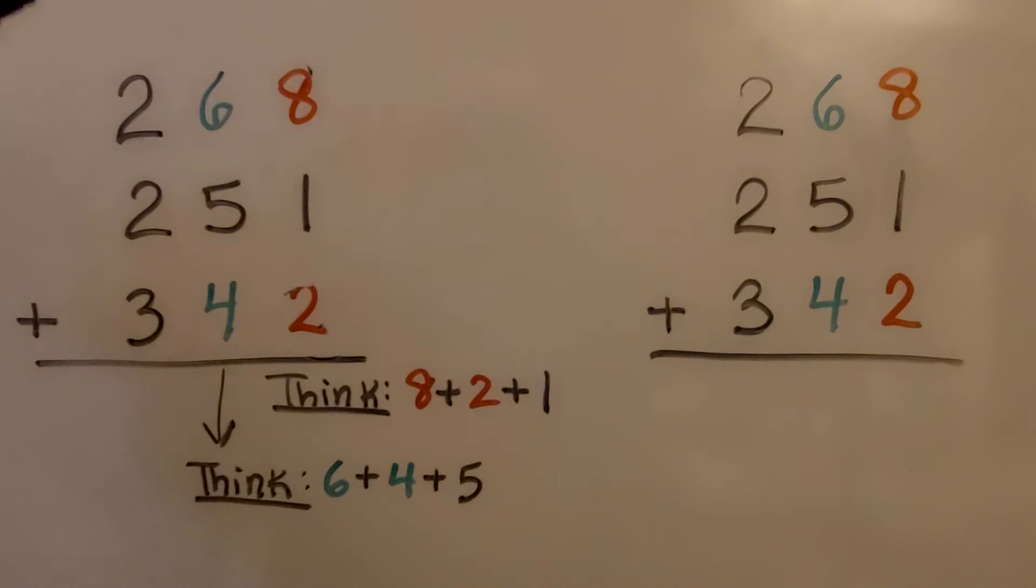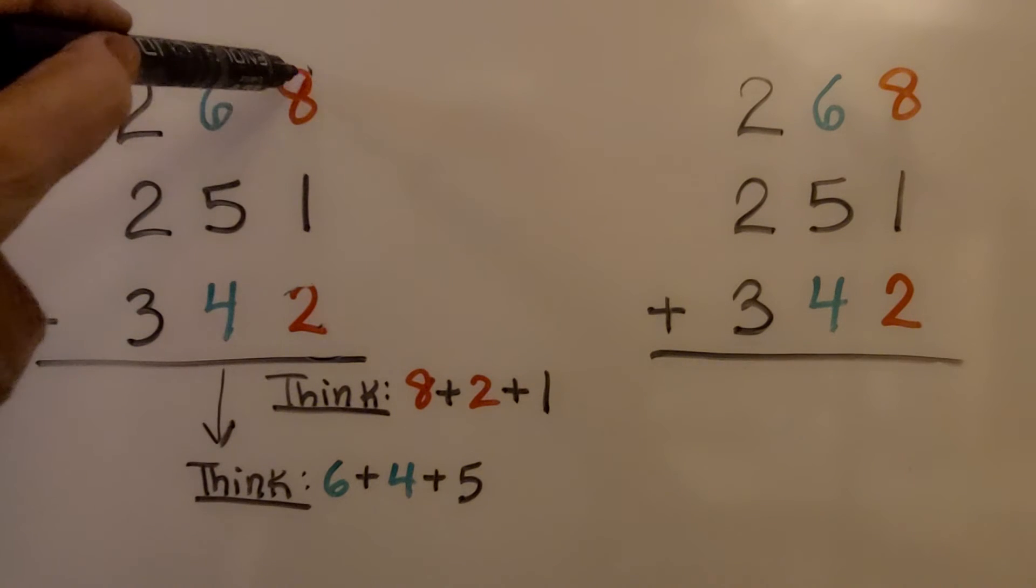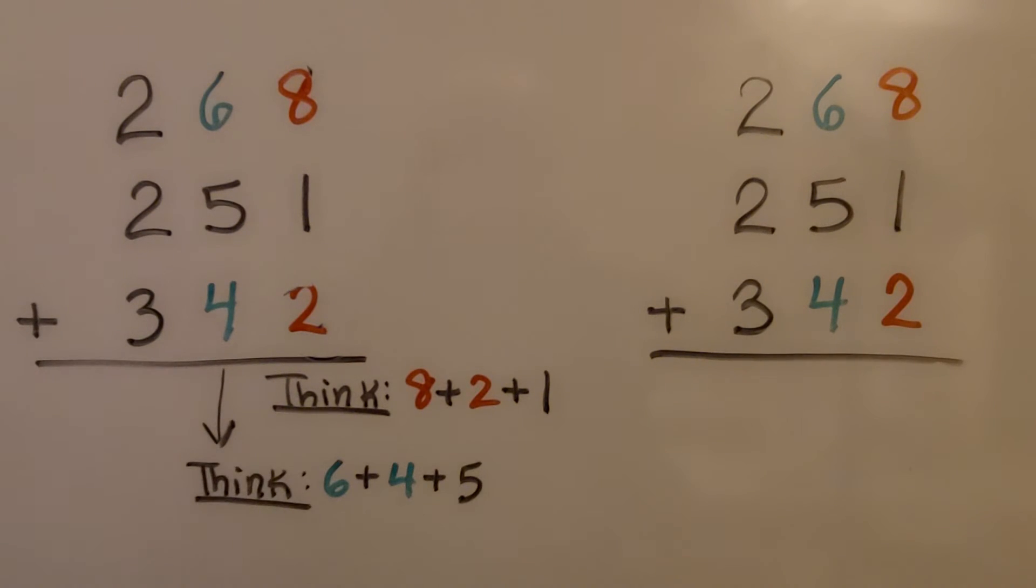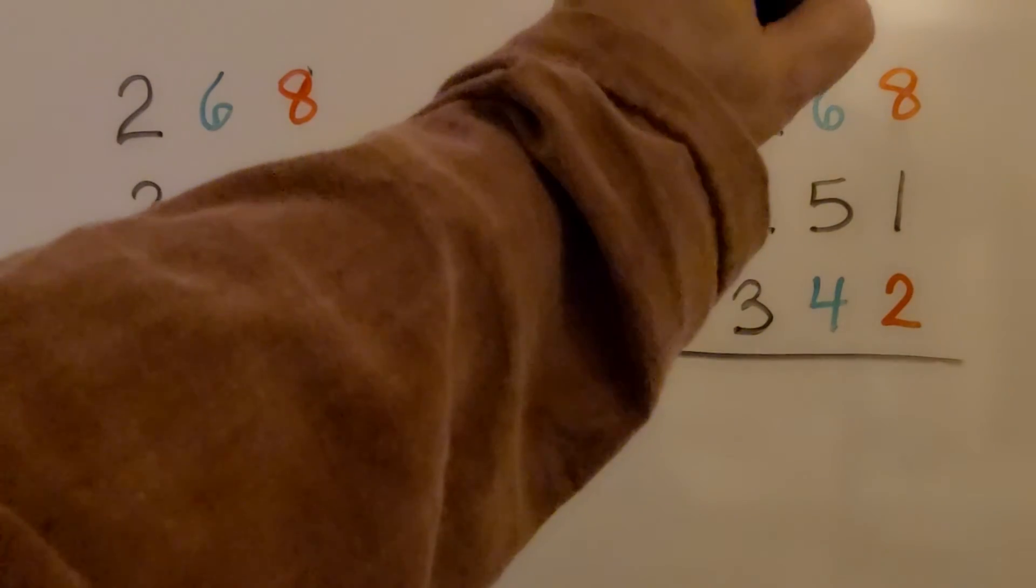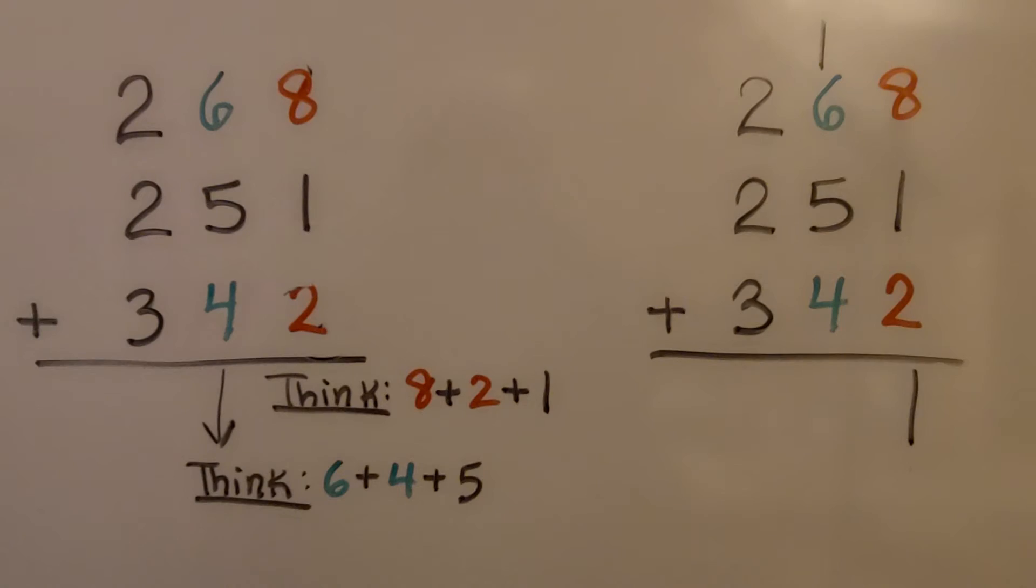Now we're going to add 268 plus 251 plus 342. We look at the ones place and think we can make a 10 with the 8 and the 2, and we have 1 left over. That's 11. So we're going to regroup the 10 to the tens place value and put our 1 in the ones place value.